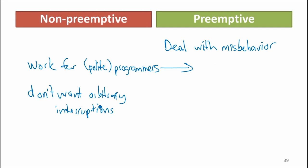The other big advantage of non-preemptive is that it's a lot simpler and probably more reliable — at least simpler to make reliable. If you're a preemptive operating system, all programs have to deal with the possibility of being interrupted at any time. If you're non-preemptive, the only times that switches can happen are well-defined.